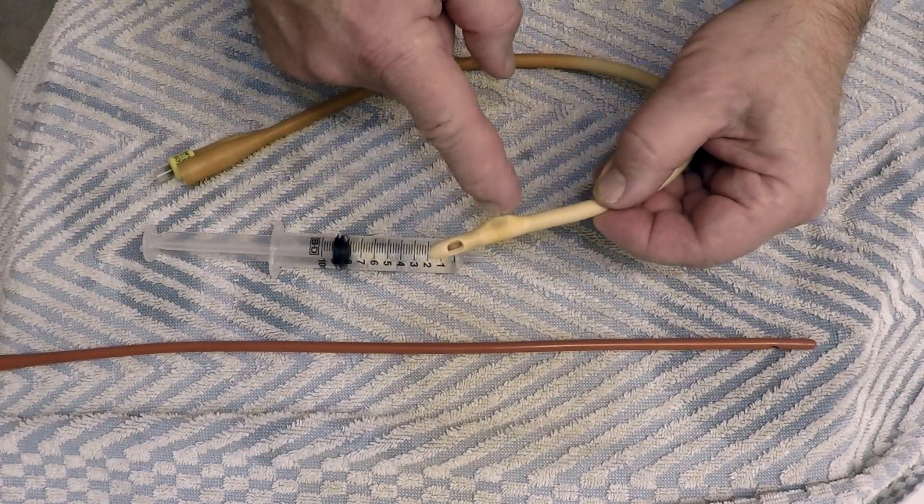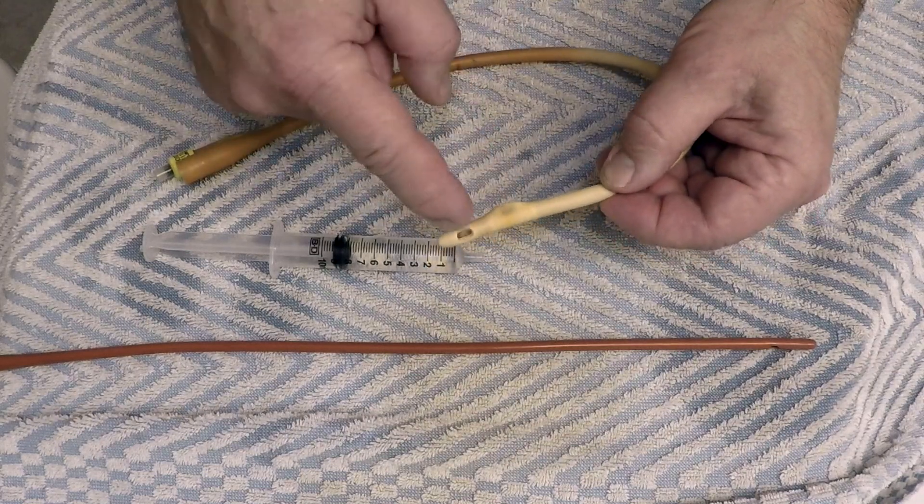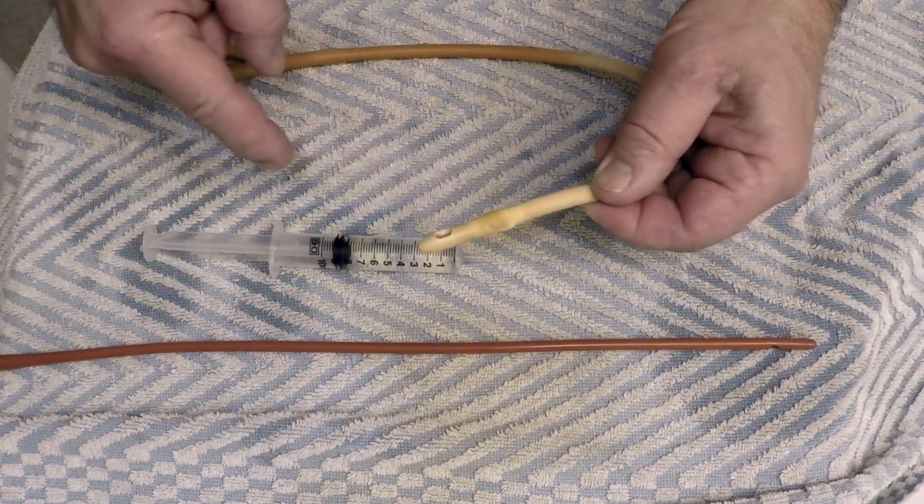You can see the bulb on the end here that goes into your bladder and then the two holes that drain the bladder.